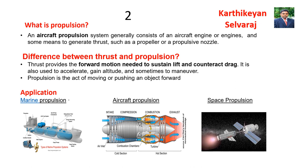Thrust provides the forward motion needed to sustain lift and counteract drag. It is also used to accelerate, gain altitude, and sometimes to manoeuvre. But propulsion is the act of moving or pushing an object in a forward direction.